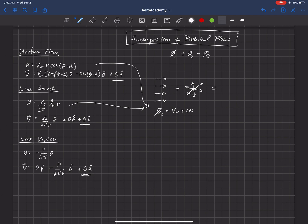So if we just bring this phi down and add it to this phi here, our new phi, we'll call it phi3, once we add phi1 and phi2, will be equal to V infinity r cosine theta. And for now, we're going to say the angle of attack is zero, just to simplify things a little bit. And then plus lambda over 2π natural log of r.